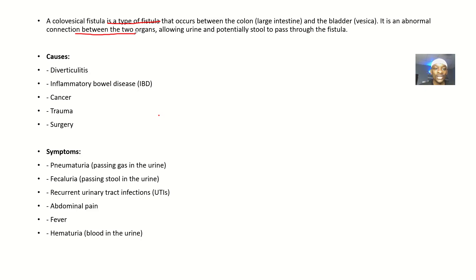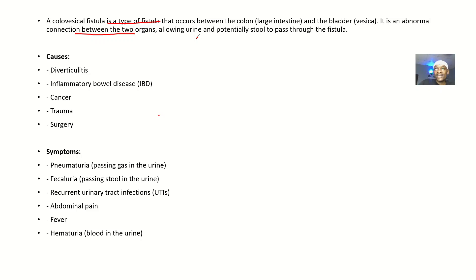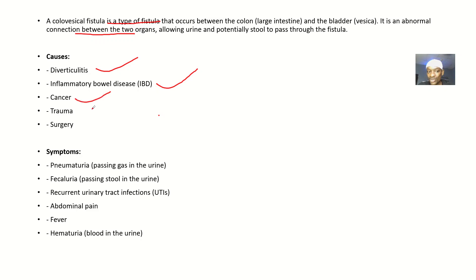It is an abnormal communication between these two organs, allowing urine and potentially stool to pass through the fistula. So either urine is passing from the bladder back into the intestine, or stool is passing from the intestine right into the bladder. The causes include diverticulitis, inflammatory bowel disease, cancer, trauma, and surgery.